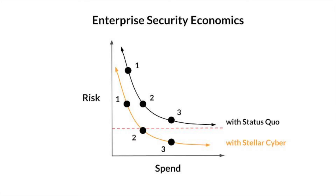Our technology can be used to move between these curves — maintain spend and reduce risk, or reduce spend and maintain current risk levels. Our customers see results like 50% reduction in SecOps costs and 3x increase in productivity. This is made possible through our OpenXCR platform, a unified platform for SecOps for higher performance detection and response and a simpler security stack.